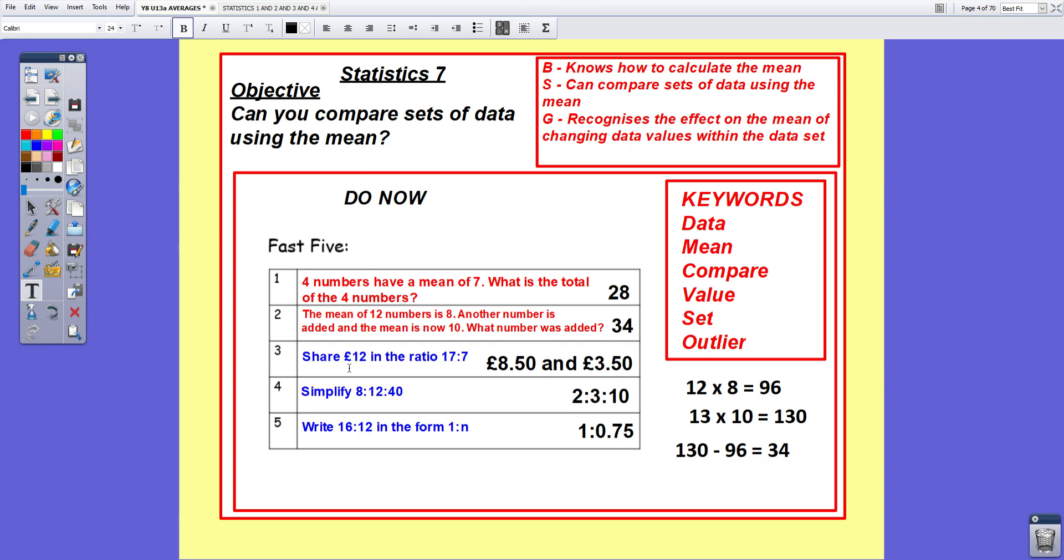Question three, share 12 pounds in the ratio 17 to 7. 17 add 7 is 24. 12 pounds divided by 24 is 50 pence. 17 times 50 pence is 8 pounds 50. 7 times 50 pence is 3 pounds 50. Question four, simplify 8 to 12 to 40. All three numbers divide by 4, giving 2 to 3 to 10.